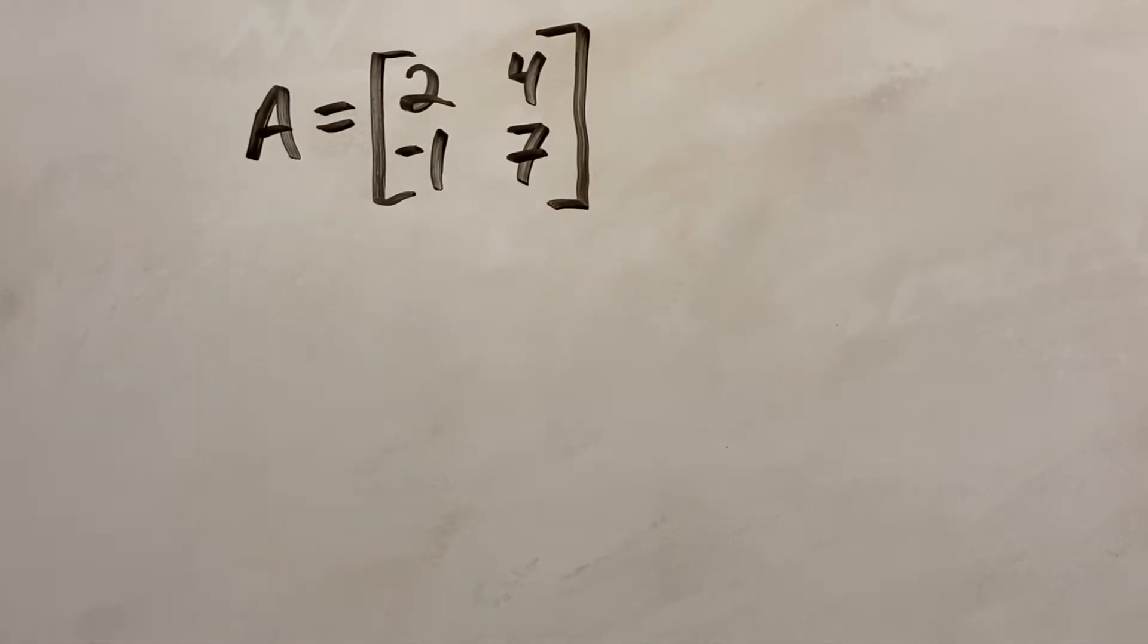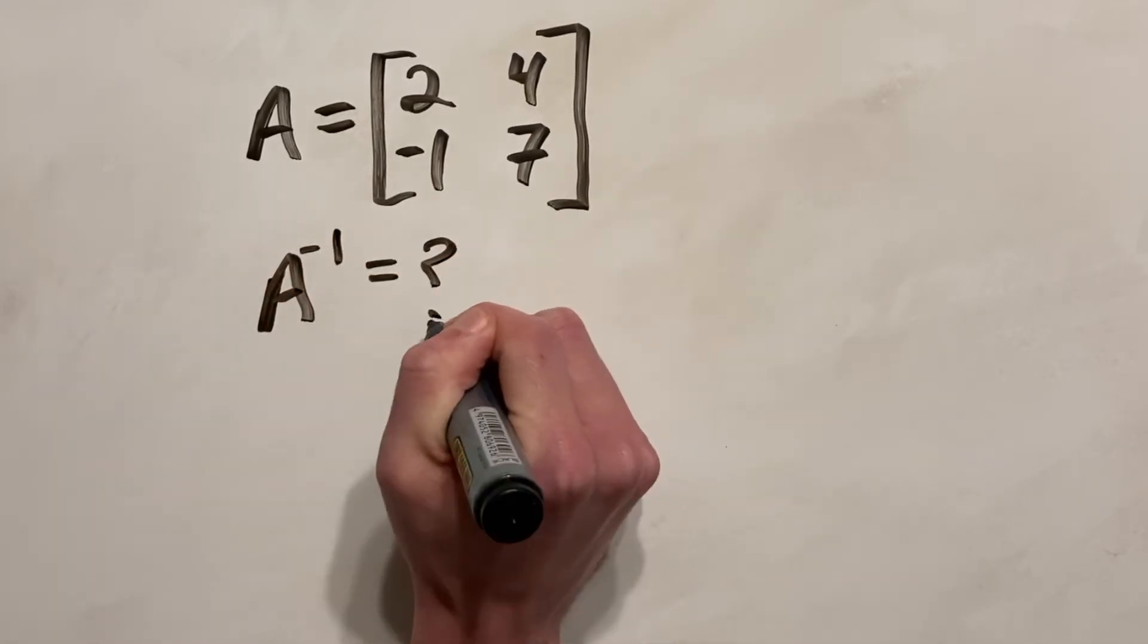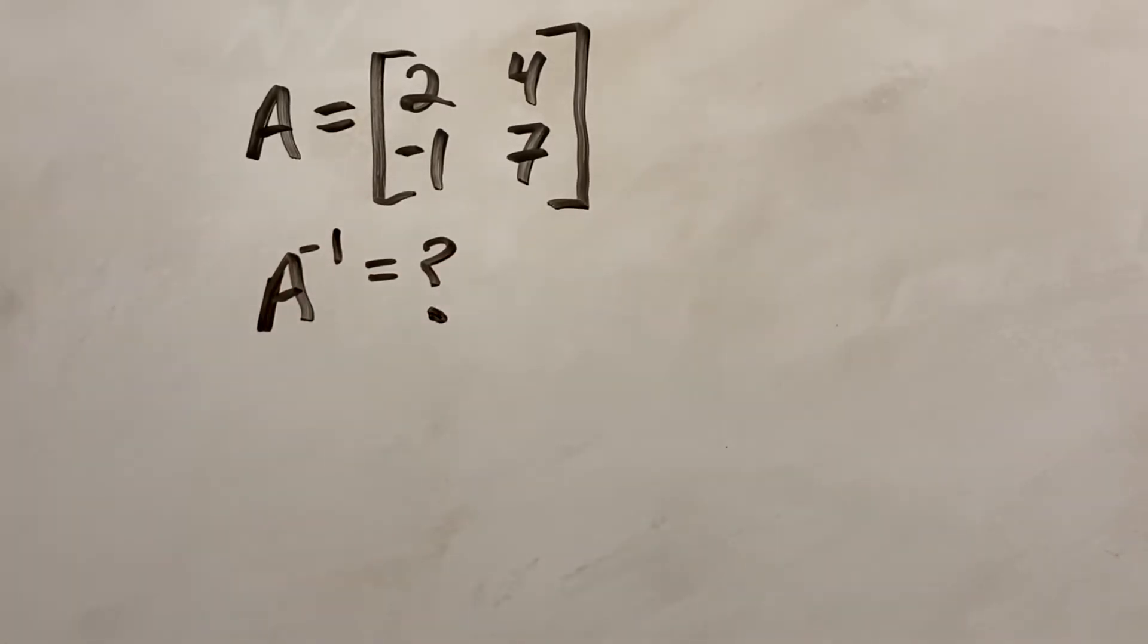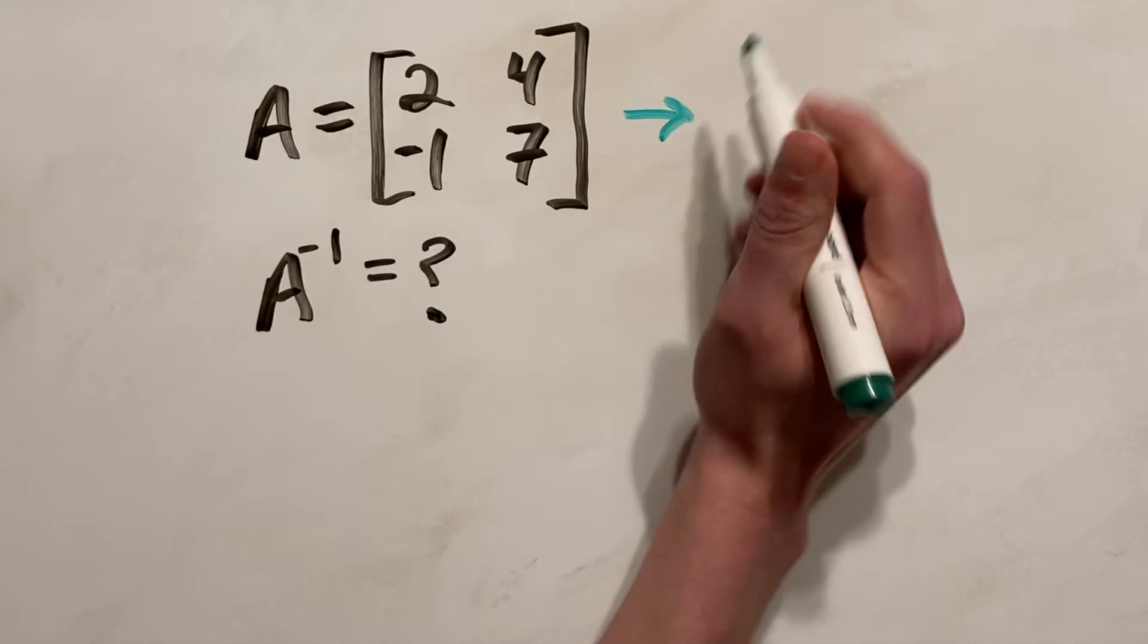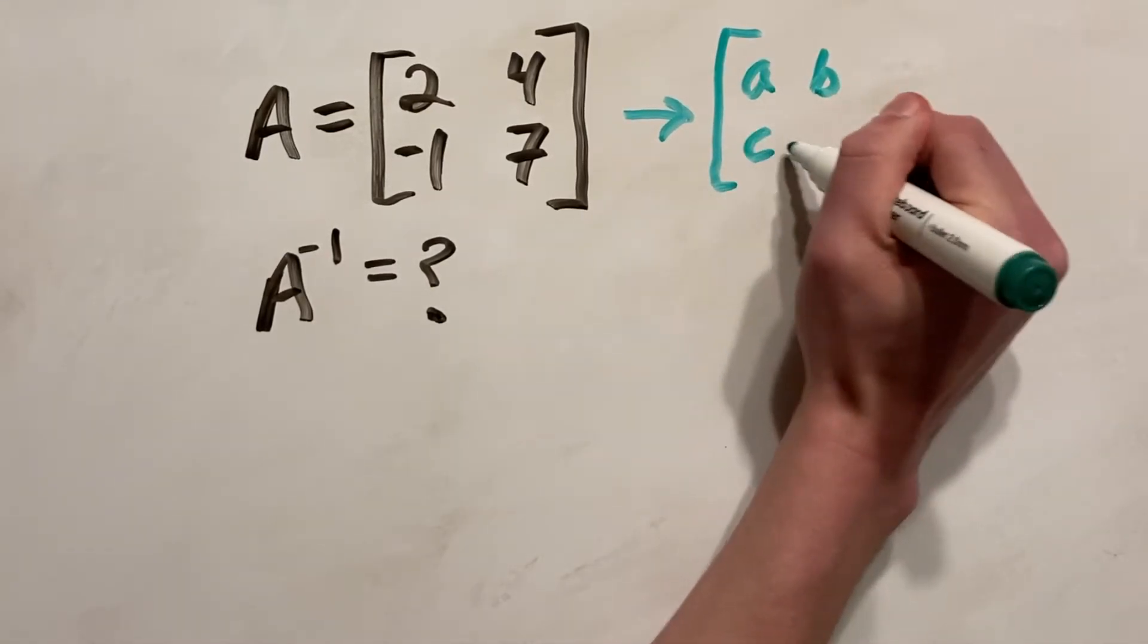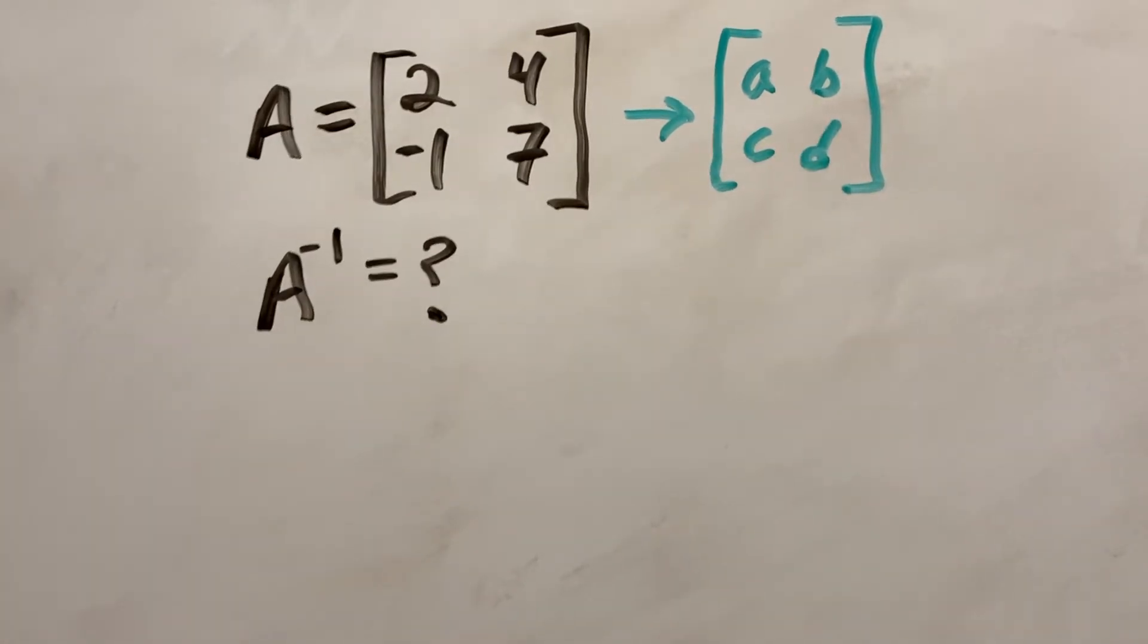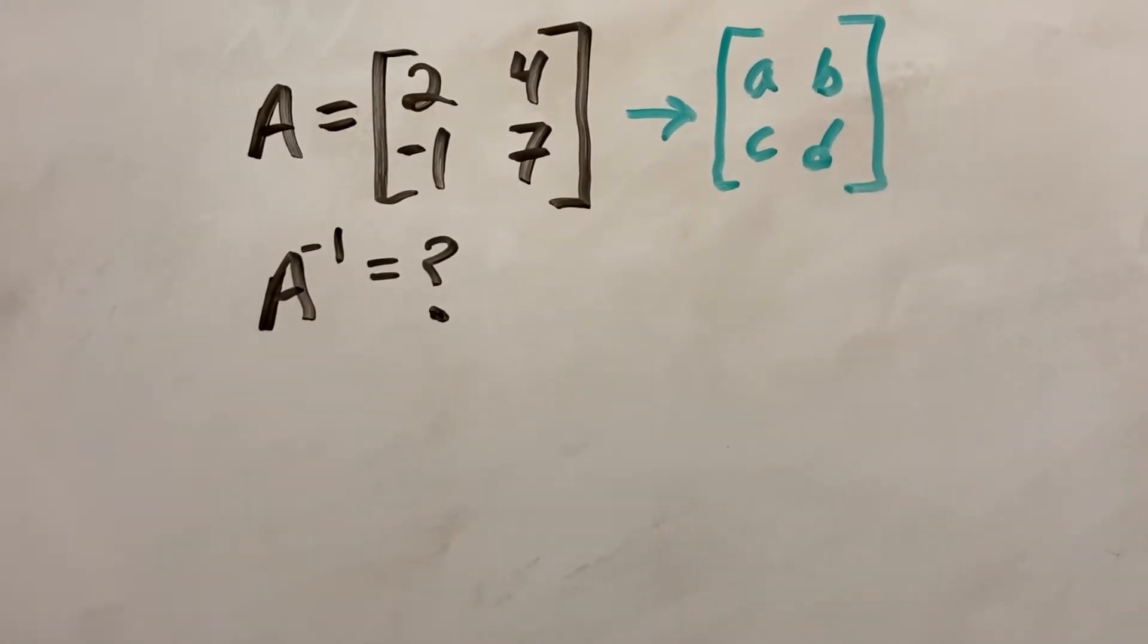So when we find the inverse, we label it as whatever you labeled the original matrix to the power of negative 1. So in this case our inverse will be A to the negative 1. Now, one thing to note when finding the inverse is that the elements in your matrix relate to different letters. So our 2 relates to A, our 4 relates to B, and so on. So it's just A, B, C, and D.